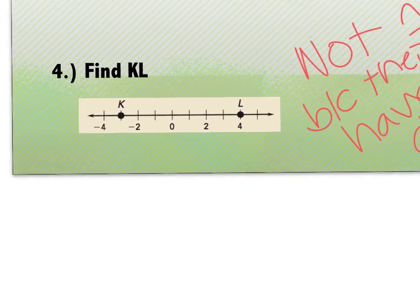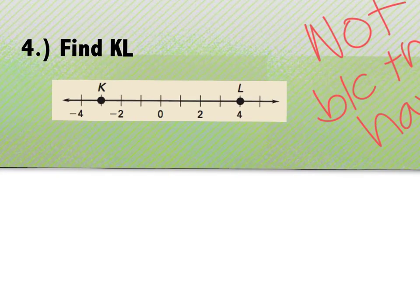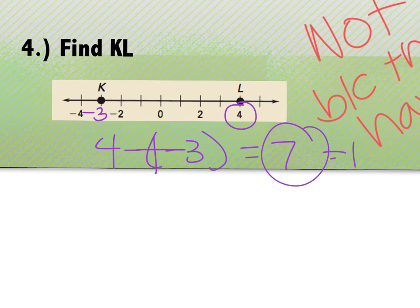And then it says explain, and it's because they have different lengths or not the same lengths. Number four says find KL. So you can either do the absolute value of K minus L, or I can go to the bigger one, which is four, and subtract from it the smaller one, which would be negative three. Four minus a negative three, four plus three, which is seven, the length of KL.